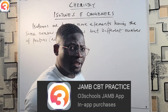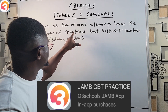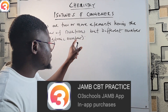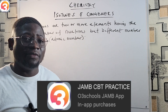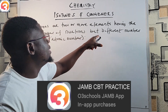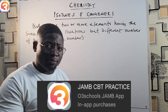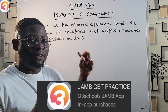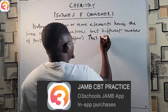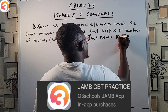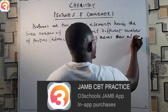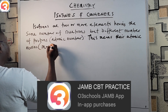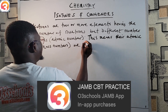If an element is to have a different number of neutrons and protons, it means the atomic mass is different. So the atomic masses — or mass numbers — of the elements we are discussing will also be different. If two or more elements have the same number of neutrons but different number of protons, their mass numbers will also be different.